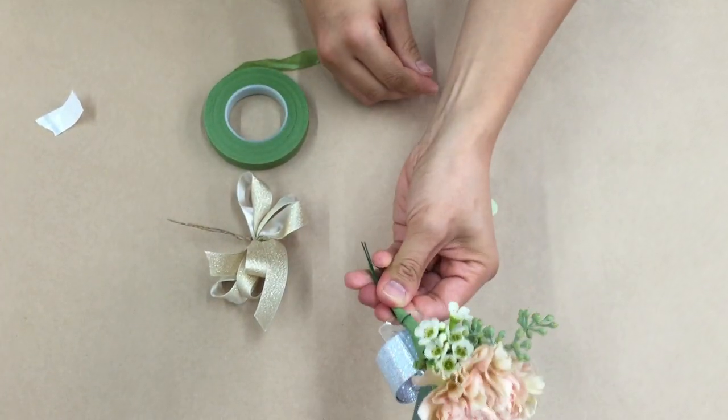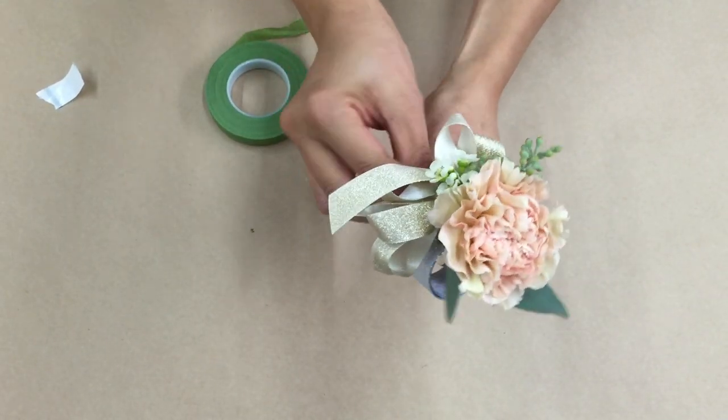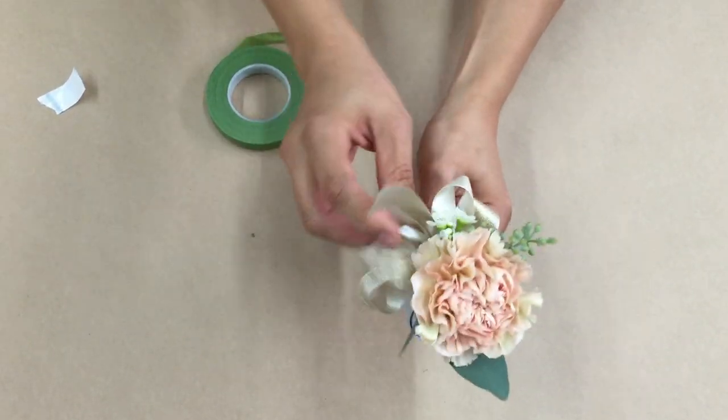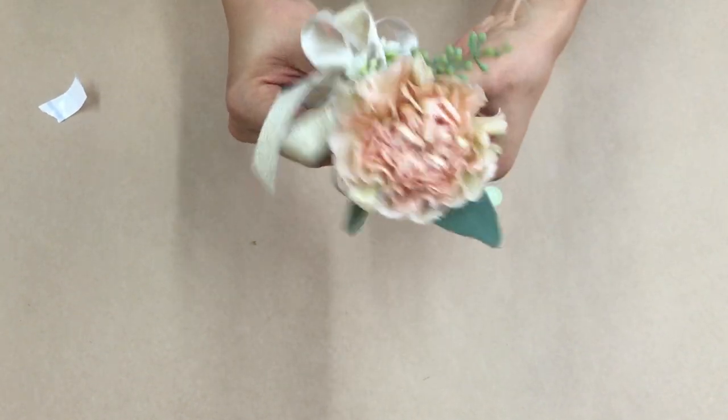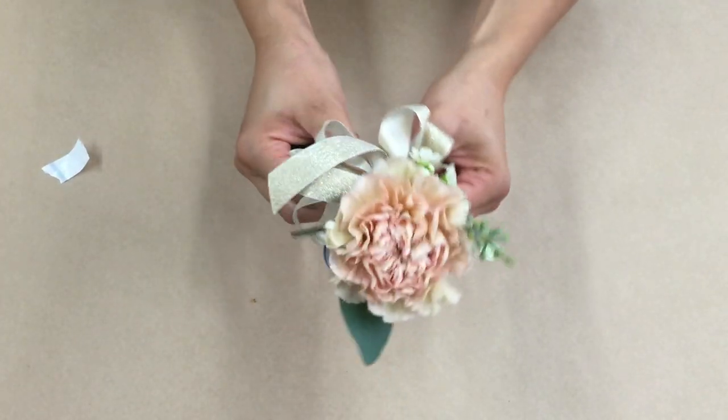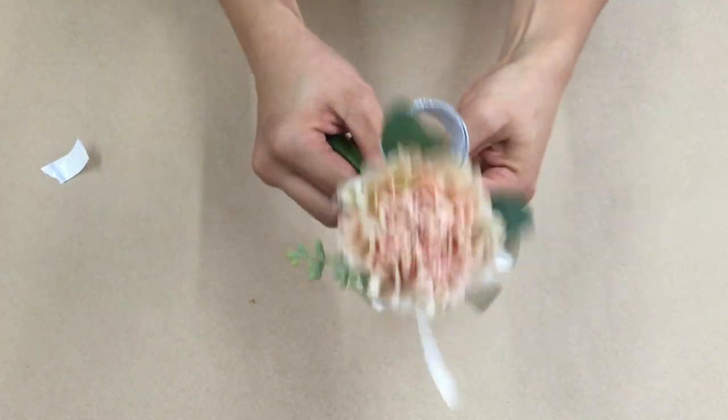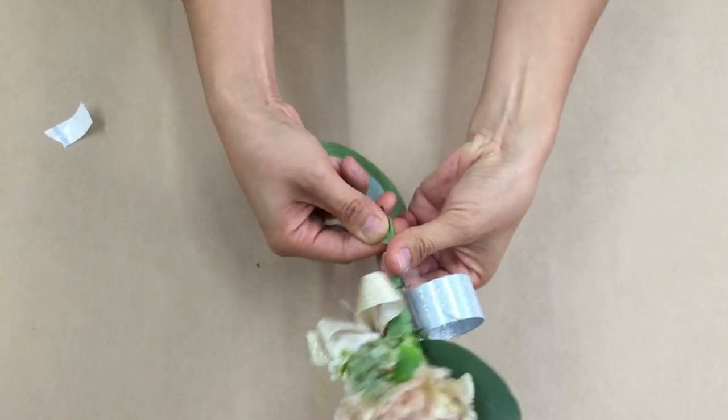So this is basically your corsage. Now you're going to finish it off with the enclosed ribbon that we have in the kit. You're going to tape the wires together. You can adjust the ribbon after you're done. Just tape and twirl.